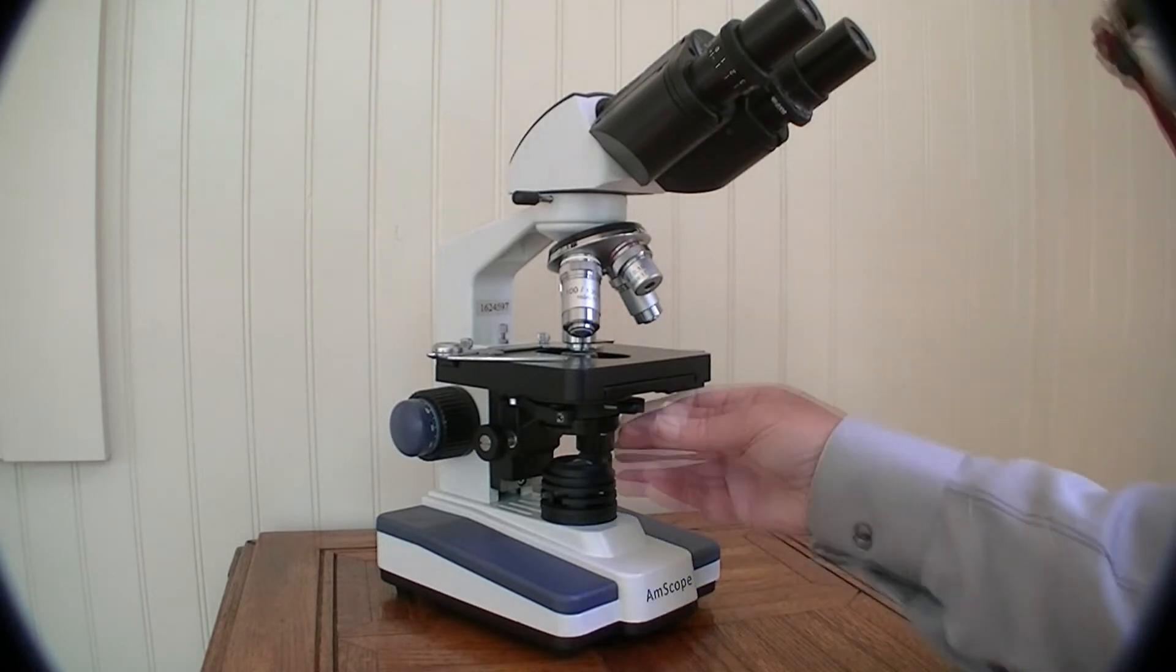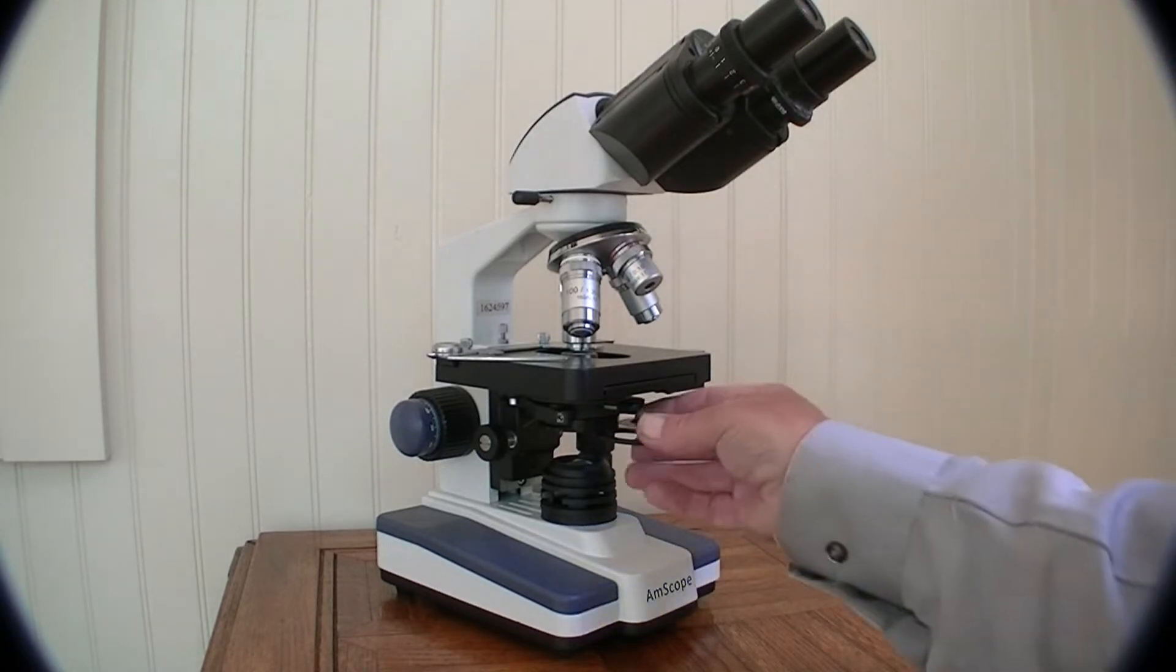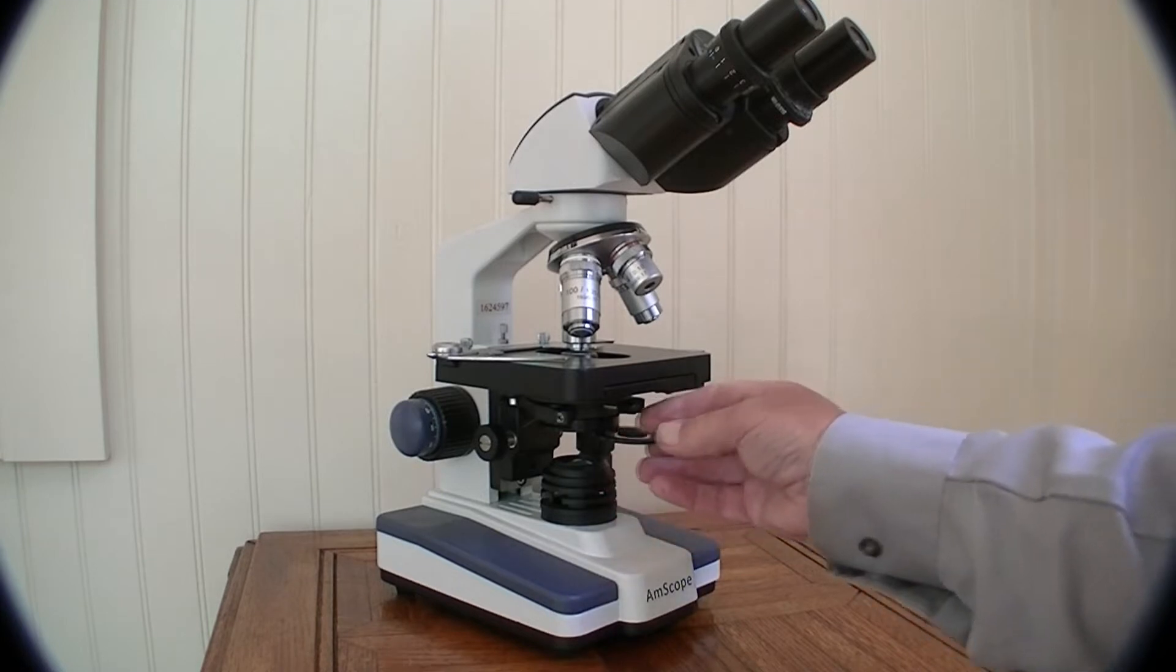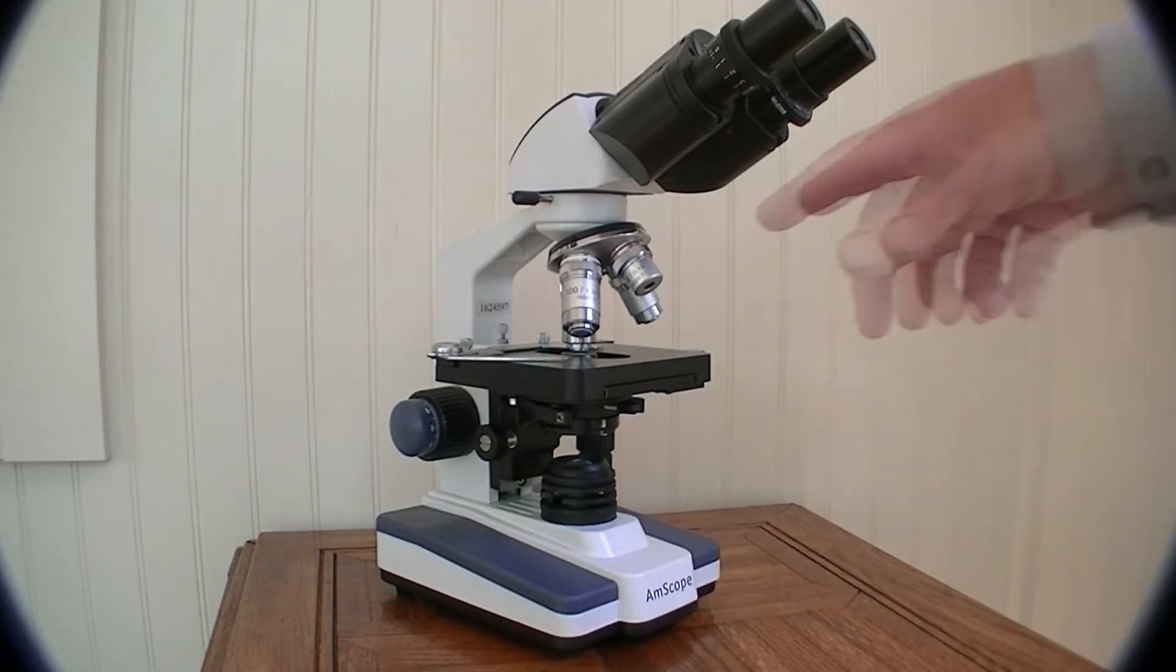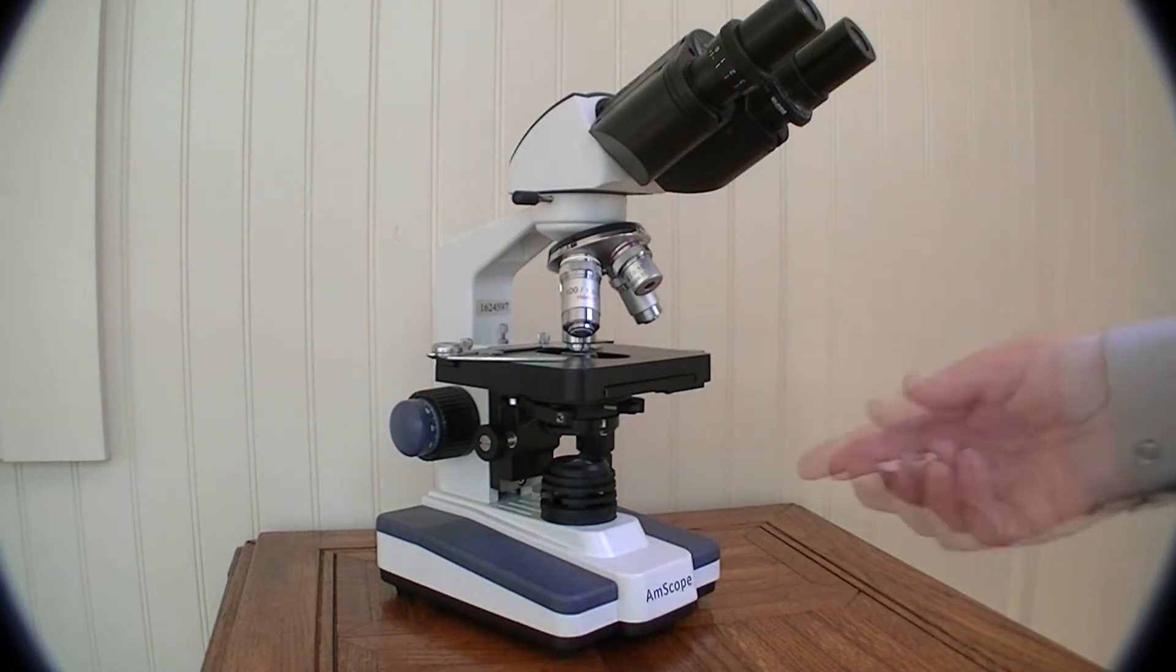Just pop that into the filter holder and make sure the condenser iris is fully open, then put your sample on the stage and wrap the condenser up so you get the dark-field effect.